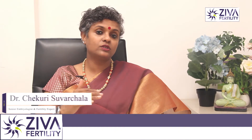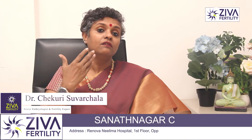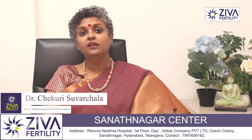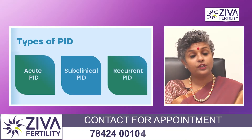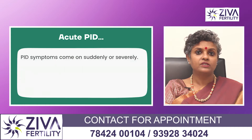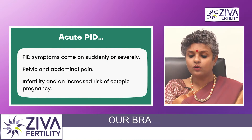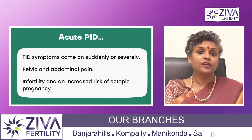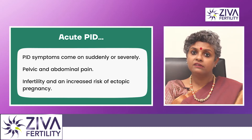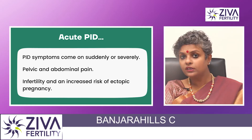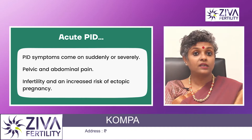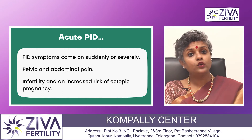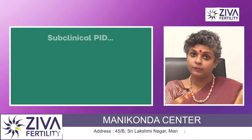If the infection goes above the uterus, it is called Pelvic Inflammatory Disease. There are three types of PID. The first is acute PID, which is very severe and sudden. When symptoms appear suddenly and severely, it is called acute PID. This can also lead to long-term problems such as stomach pain, infertility, or ectopic pregnancy.